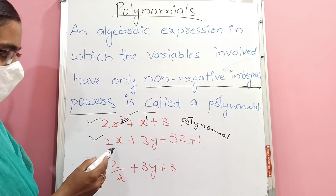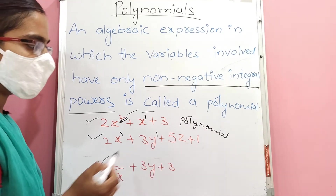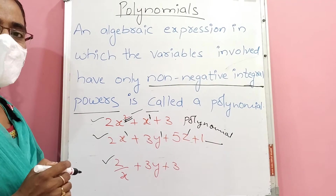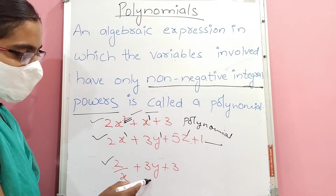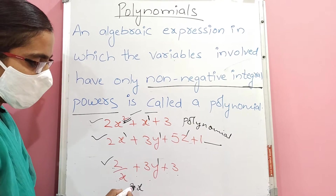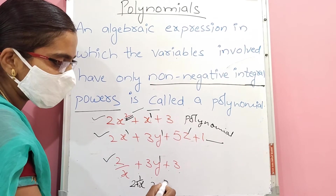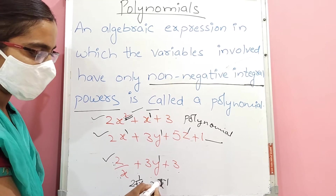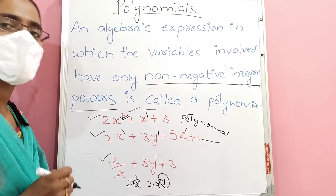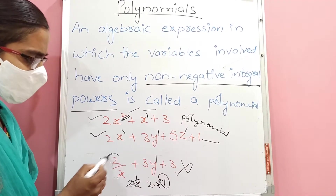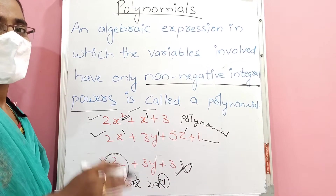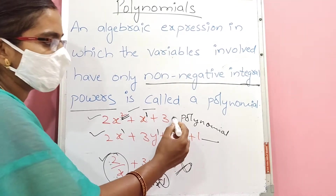Here these are algebraic expressions. In this first example, the power is non-negative — positive integer 2 — and here power 1. All variable powers are non-negative integers, so this is called a polynomial. This second example is also a polynomial, with variable powers all equal to 1. But consider 2/x + 3y + 3. Here 2/x can be written as 2 into x to the power minus 1, which means x has a negative power. If at least one term has a negative power, it is not a polynomial.